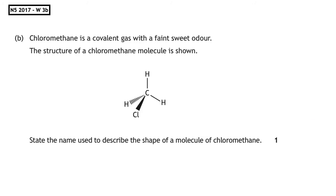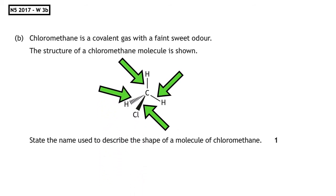This question is from the National 5, 2017, written question 3b: 'Chloromethane is a covalent gas with a faint sweet odour. State the name used to describe the shape of a molecule of chloromethane.' The shape of a molecule is determined by the number of bonds the central atom has. The central atom is carbon and it has four lines coming out, meaning carbon has formed four covalent bonds. The prefix for four is 'tetra', so the answer is a tetrahedral structure.